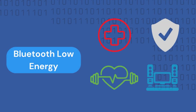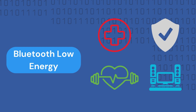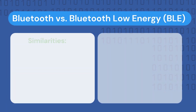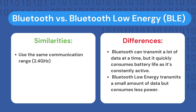Bluetooth Low Energy hit the markets in 2011. It is a wireless personal area network technology designed and marketed by the Bluetooth Special Interest Group, or Bluetooth SIG, aimed at applications in healthcare, fitness, security, and home entertainment. When comparing BLE with classic Bluetooth, BLE has been designed with the intention of providing considerably reduced power consumption and cost while maintaining a similar communication range. Both classic Bluetooth and BLE operate in the 2.4 gigahertz band.